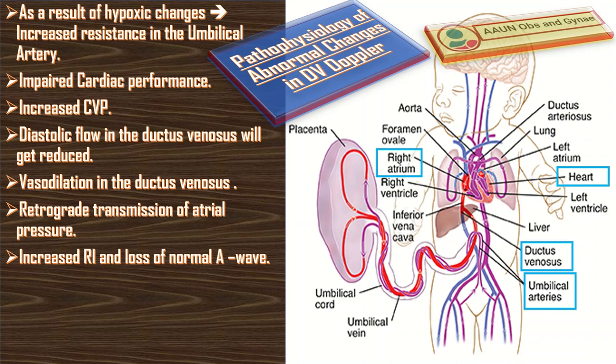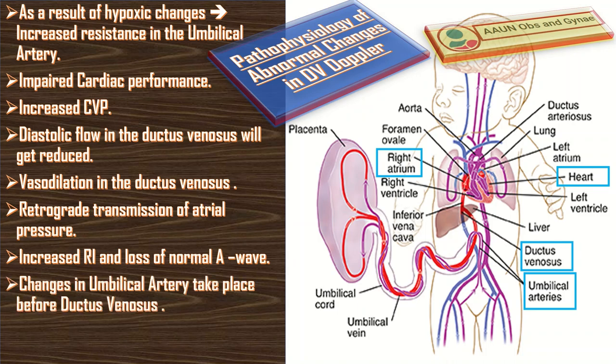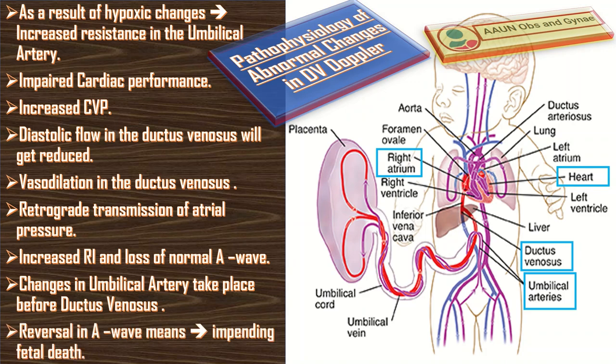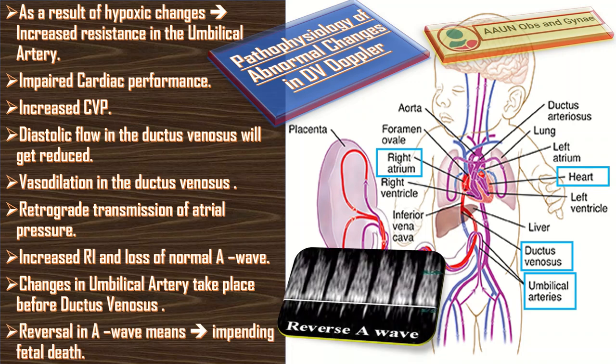In order to compensate for these changes, there is vasodilation in the ductus venosus, then retrograde transmission of atrial pressure. This leads to an increased resistance index and the loss of the normal A wave in the ductus venosus Doppler. It is important to understand from this pathophysiology that the changes in the umbilical artery take place before the ductus venosus, so on umbilical artery Doppler you can see these changes about two weeks before the ductus venosus Doppler. Reversal of the A wave means oxygenation to the heart is impaired — it is a sign of an impending fetal death.